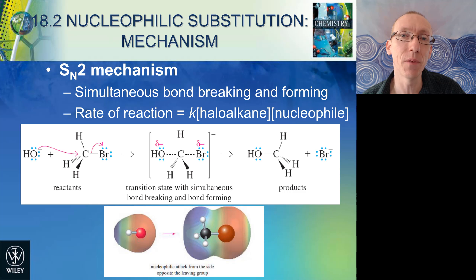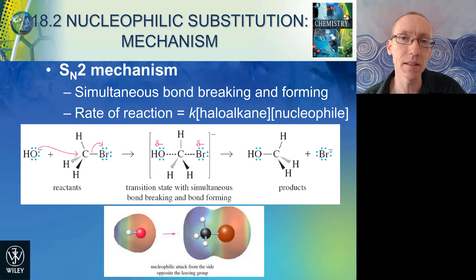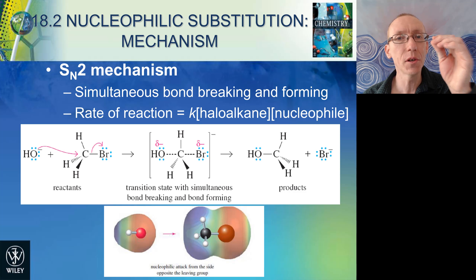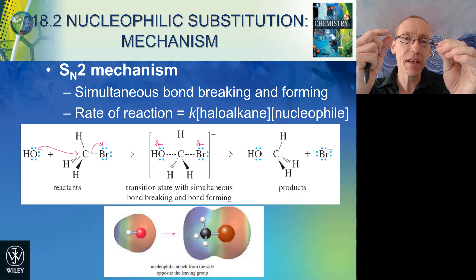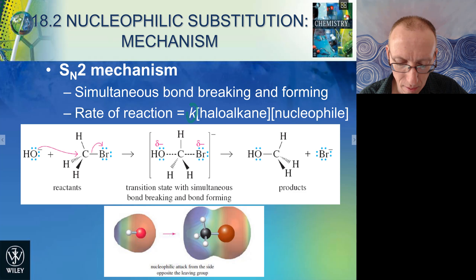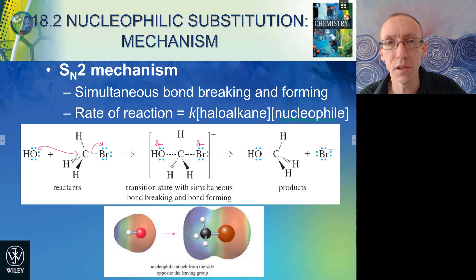The SN2 mechanism involves simultaneous breaking of the bond to the leaving group — in this case we're talking about a haloalkane, so it's a halide that's leaving — while we simultaneously get bond formation to the nucleophile group. Because both the nucleophile coming in and the reactant are both involved in the one step, the rate of these reactions is equal to a rate constant times the concentration of the haloalkane times the concentration of the nucleophile.